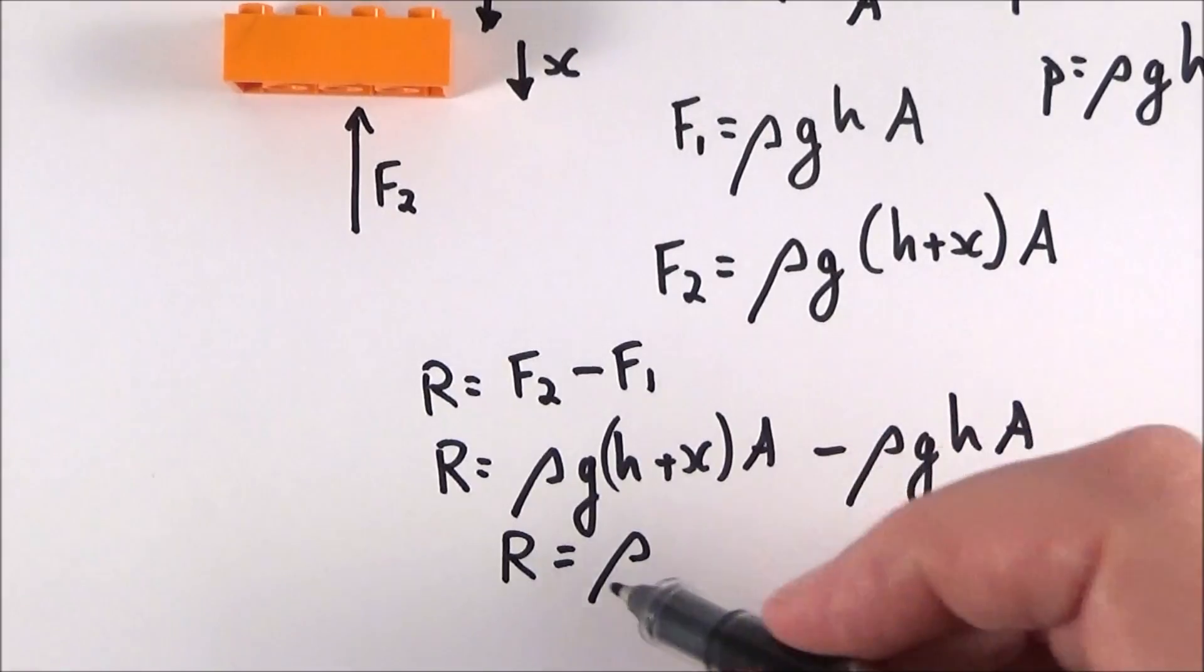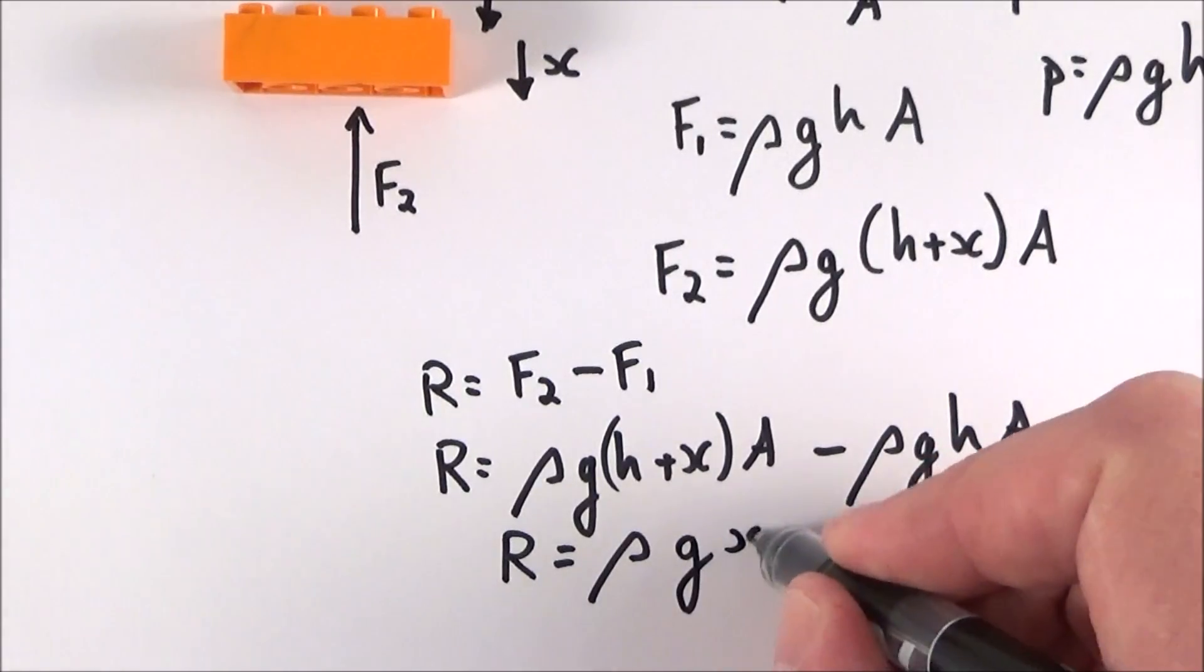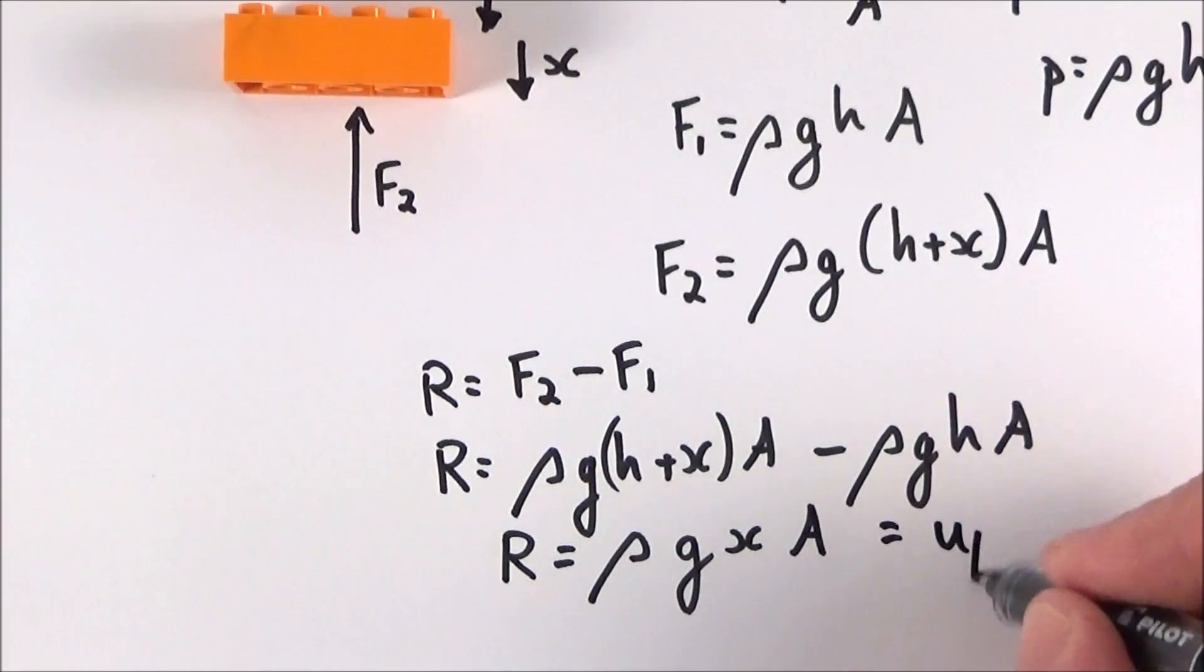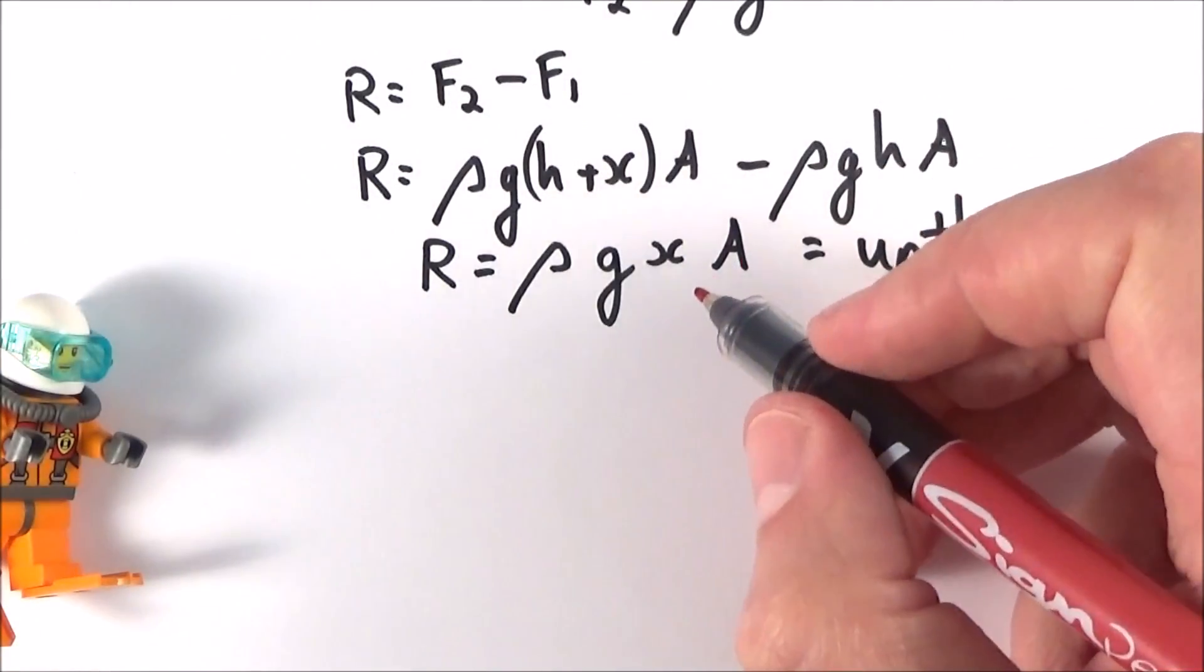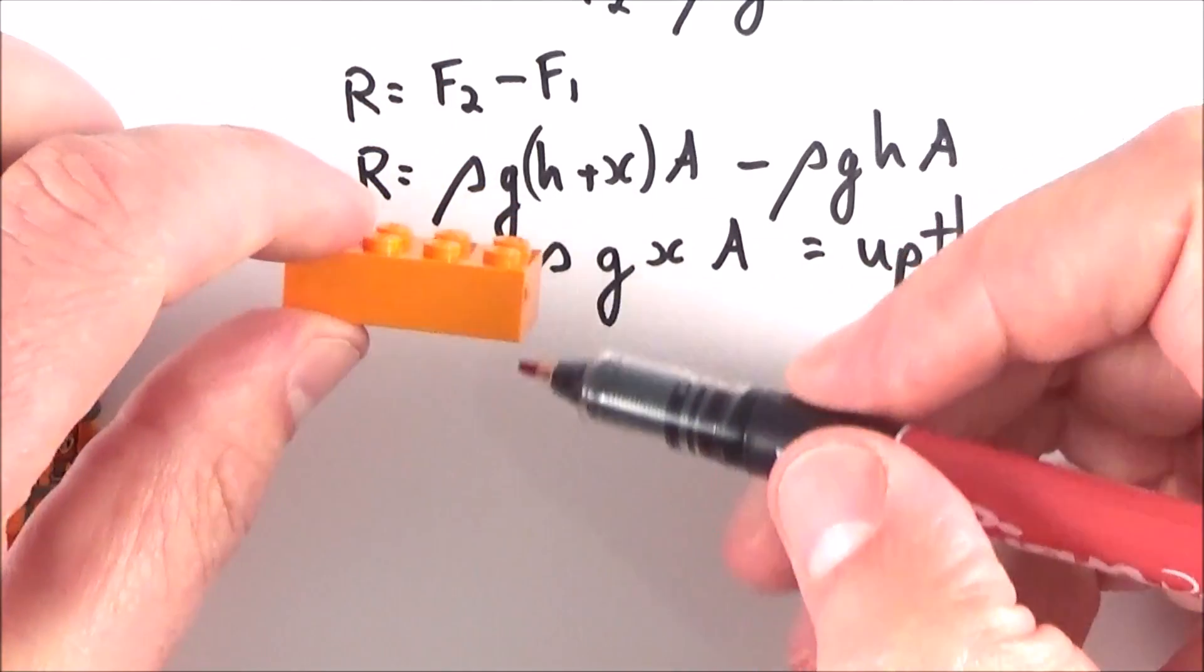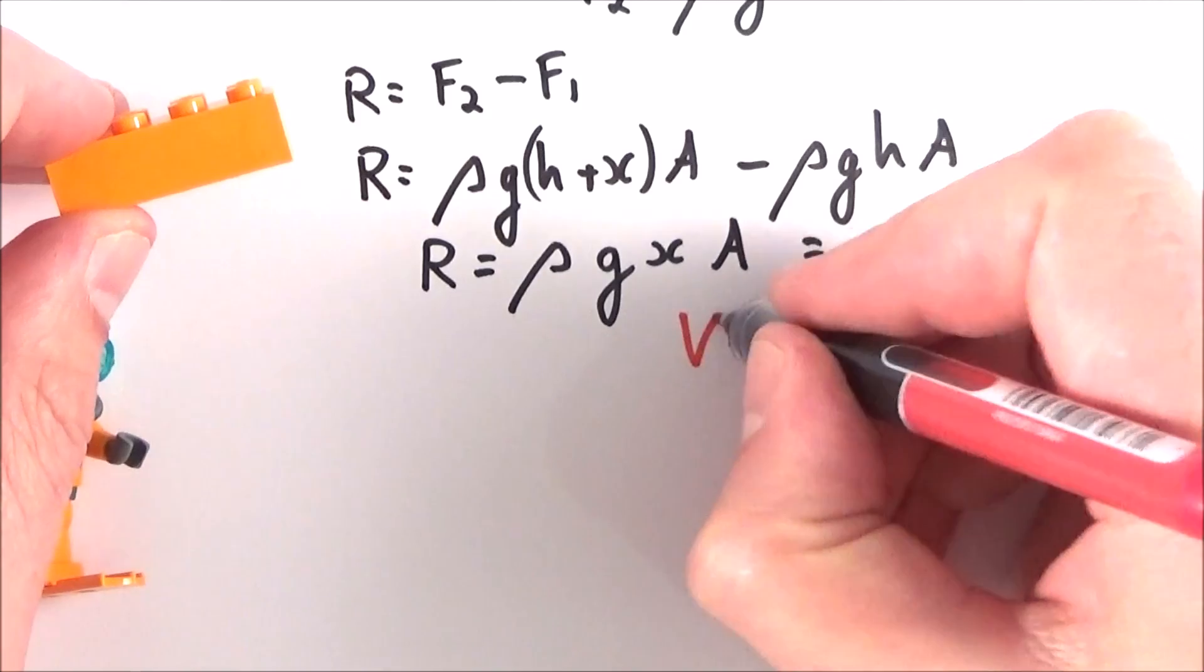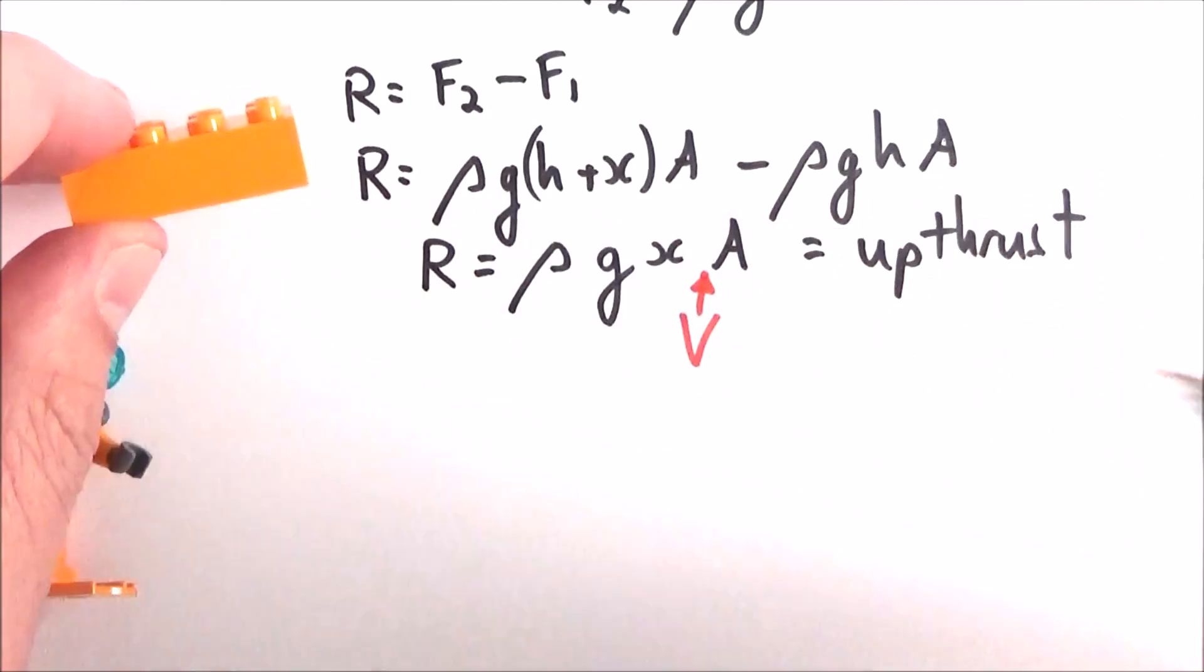This means the resultant force is equal to ρgxA and this is what we call the upthrust. From this equation, the important thing to note is that effectively the height of this object multiplied by its cross-sectional area is equal to the volume. So x times A is equal to the volume.